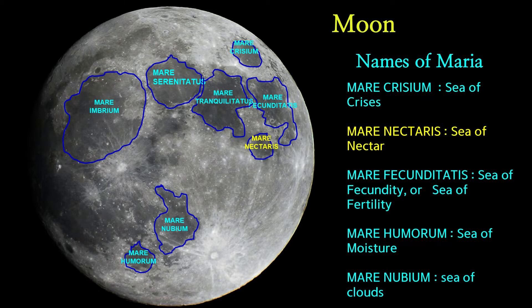Mare Nectaris is a small lunar mare located south of Mare Tranquilitatis and southwest of Mare Fecunditatis, on the near side of the Moon. Mare Nectaris means Sea of Nectar. Mare Fecunditatis is a lunar mare in the eastern half of the visible Moon. Mare Fecunditatis means Sea of Fecundity, or Sea of Fertility.